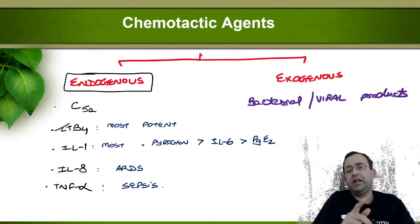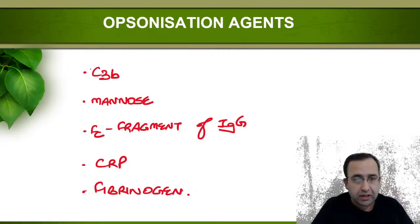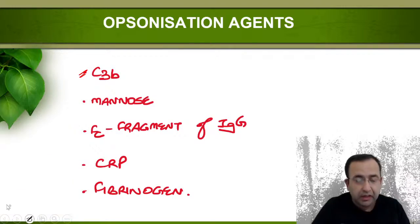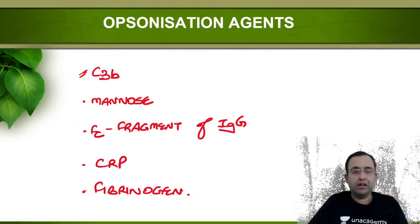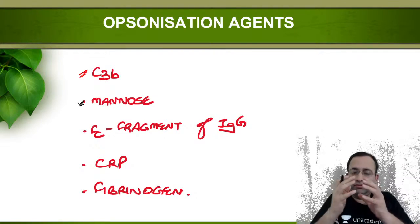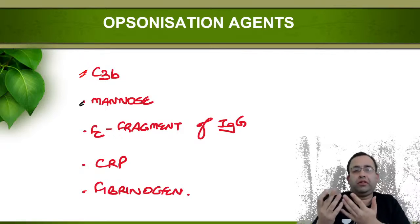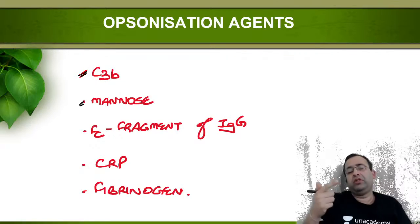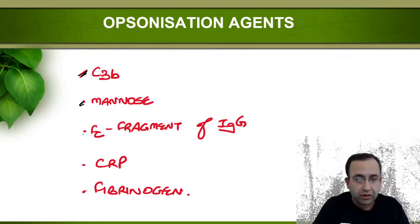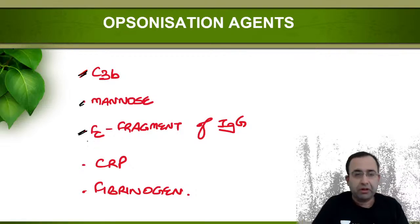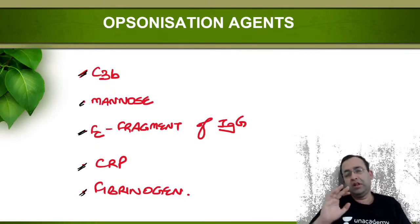Do not confuse chemotactic agents with opsonization agents. Opsonization agents make bacteria tasty for phagocytosis. The opsonizing complement protein is C3b — not C5a, which is chemotactic. Other opsonization agents include mannose (present on bacterial cell walls), FC fragment of IgG, CRP (C-reactive protein), and fibrinogen.